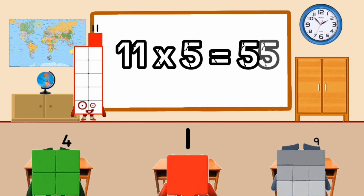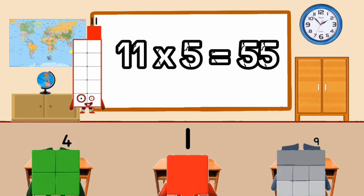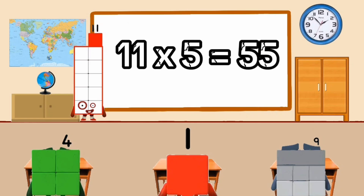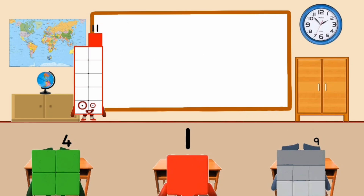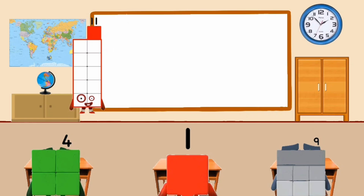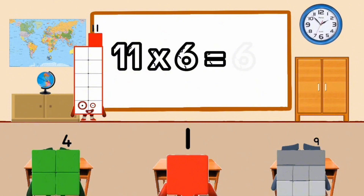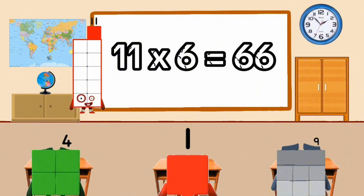11 times 5 equal 55. 11 times 6 equal 66.